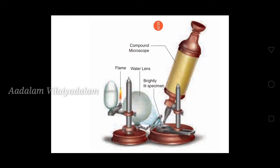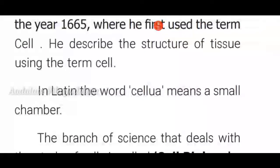Using the microscope, Hooke was able to see the minute parts of objects clearly. He also published a book called Micrographia in the year 1665. Robert Hooke was the first to use the term 'cell' — he described the structure of tissue using this term. The word 'cell' is derived from the Latin word 'cellula', meaning small chamber. The study of cells is called cell biology.